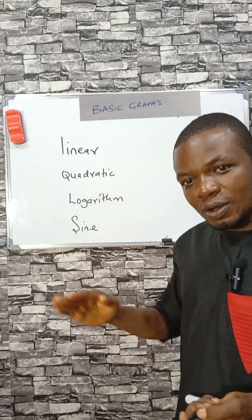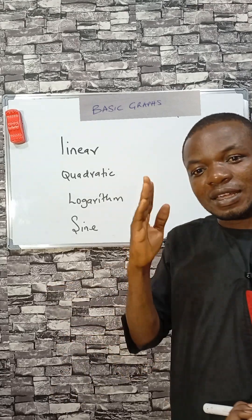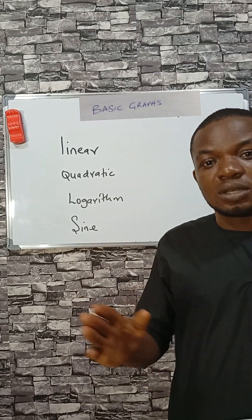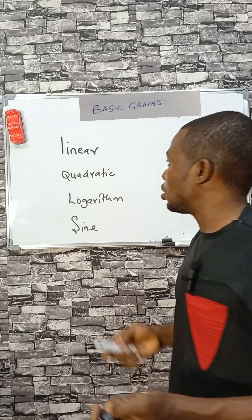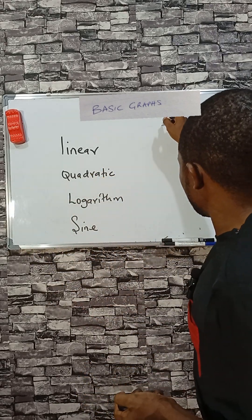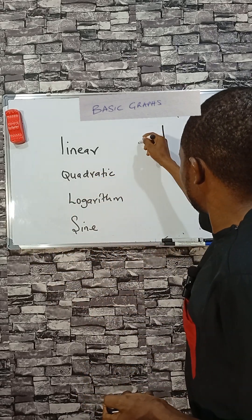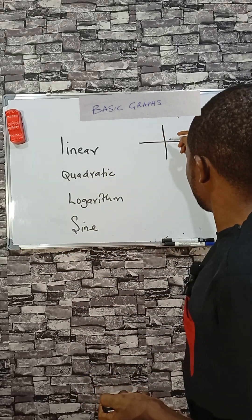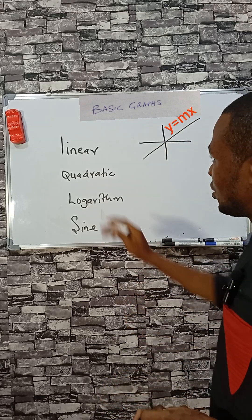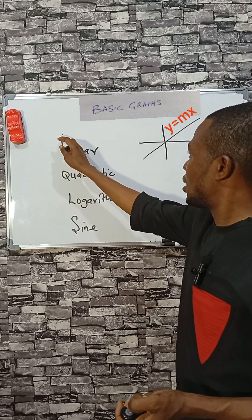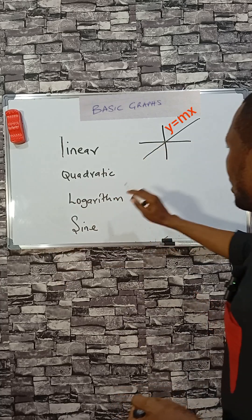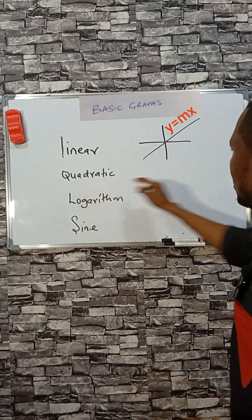Let me show you the smartest way of identifying a graph — that is, plotting each time you see one. A linear graph looks like this, just like the letter L here.